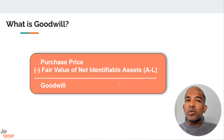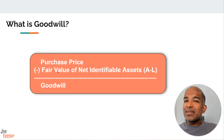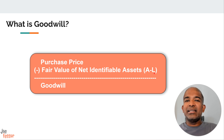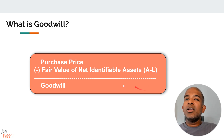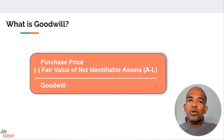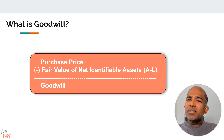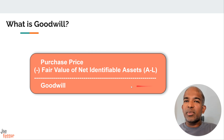So how do we calculate goodwill? It's actually pretty straightforward. We take the total price the acquiring company paid and subtract the fair value of all the assets — like cash, inventory, and equipment — minus all the liabilities, like debts, of the acquired company. Whatever is left over is considered goodwill. Goodwill is a fascinating concept because it tries to put a number on those intangible factors that make a business valuable. While it's not something you can physically touch, it can significantly impact a company's overall worth and its future prospects.